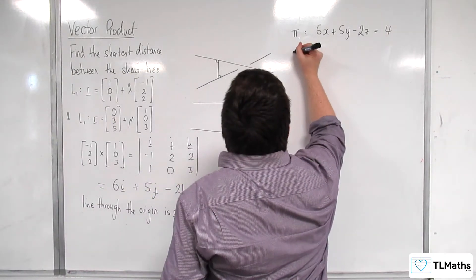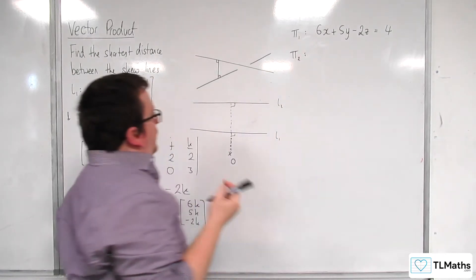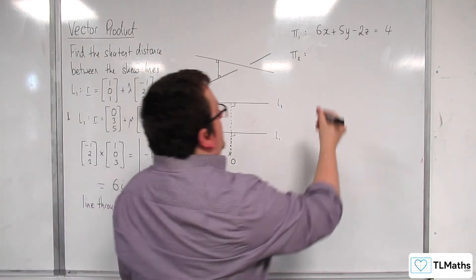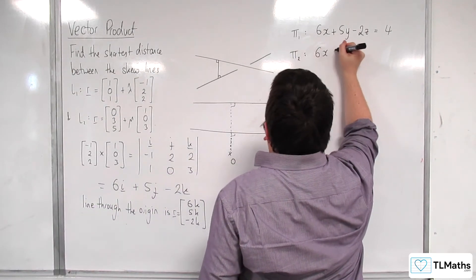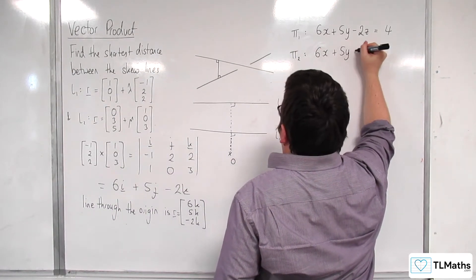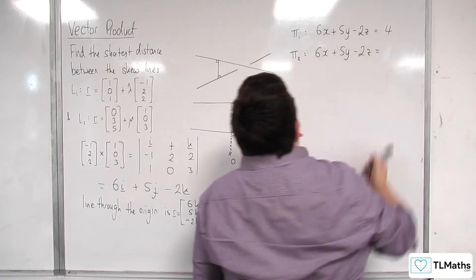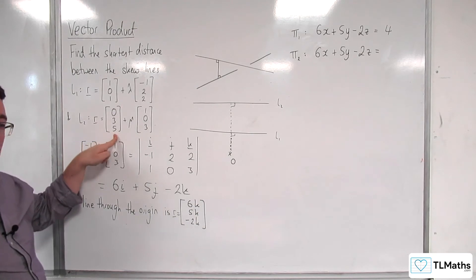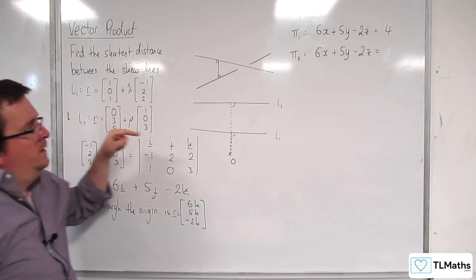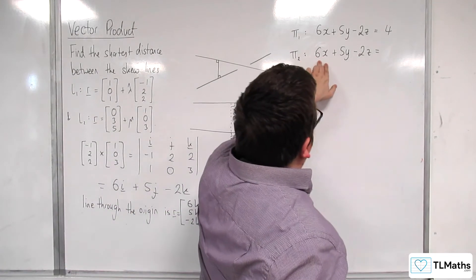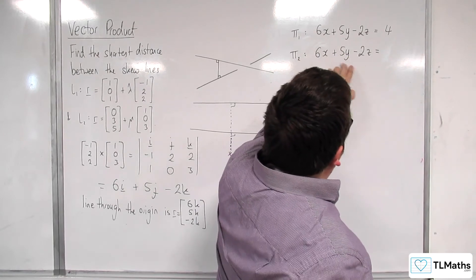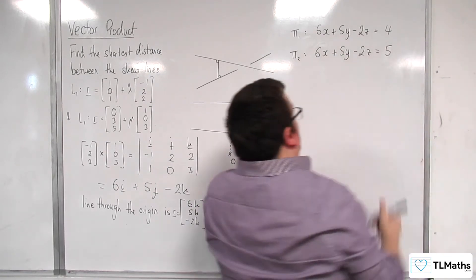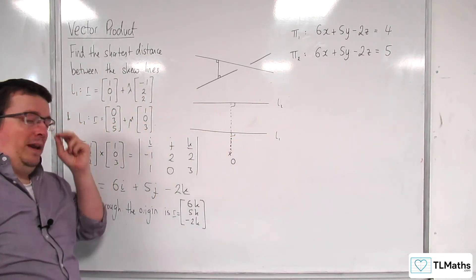Now doing the same for plane 2 — it has exactly the same normal vector, so it's 6x + 5y − 2z = c. Substituting the point (0, 3, 5): 0 + 15 − 10 = 5. So plane 2 is 6x + 5y − 2z = 5.